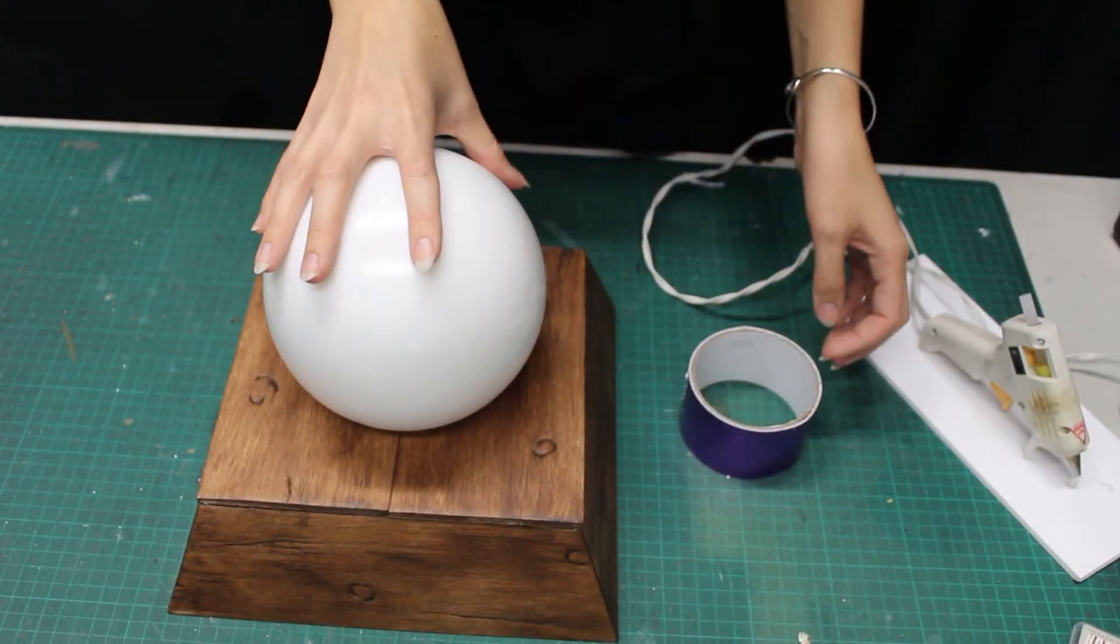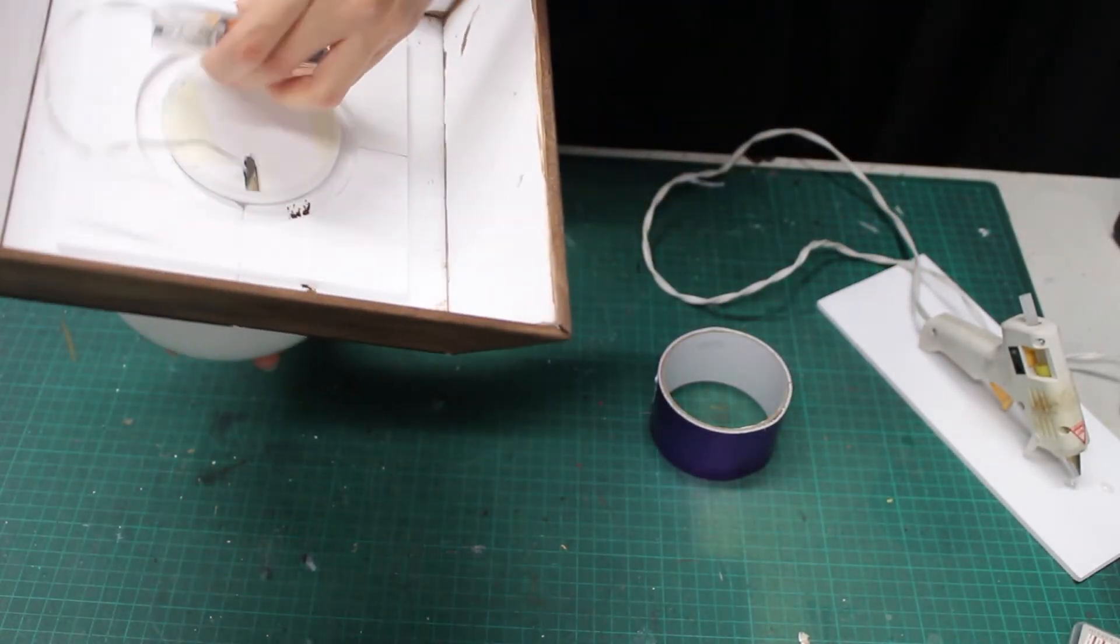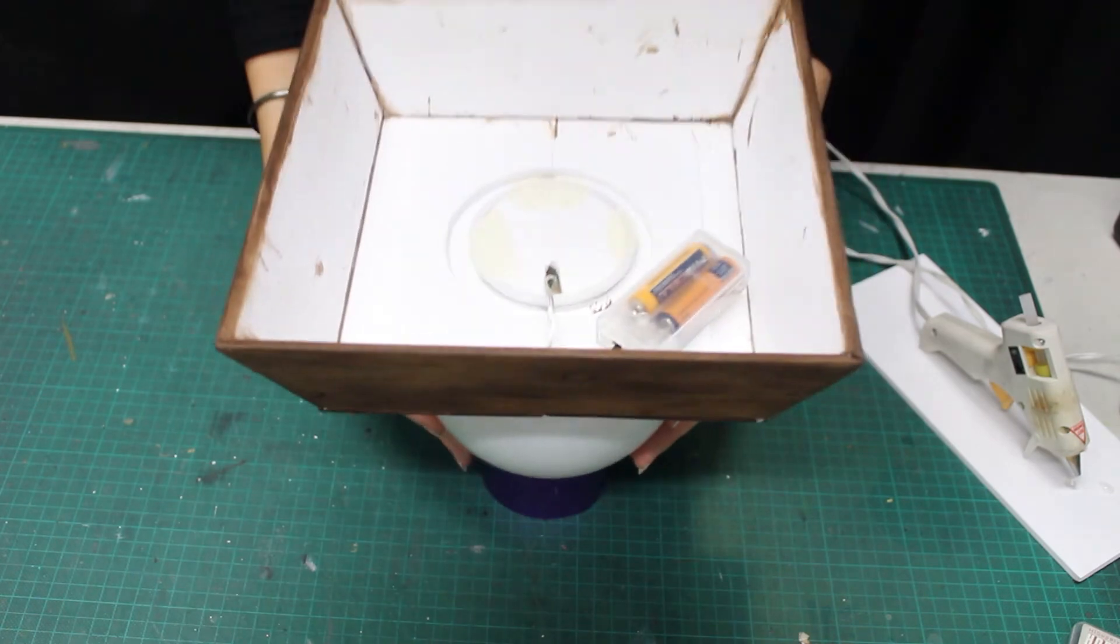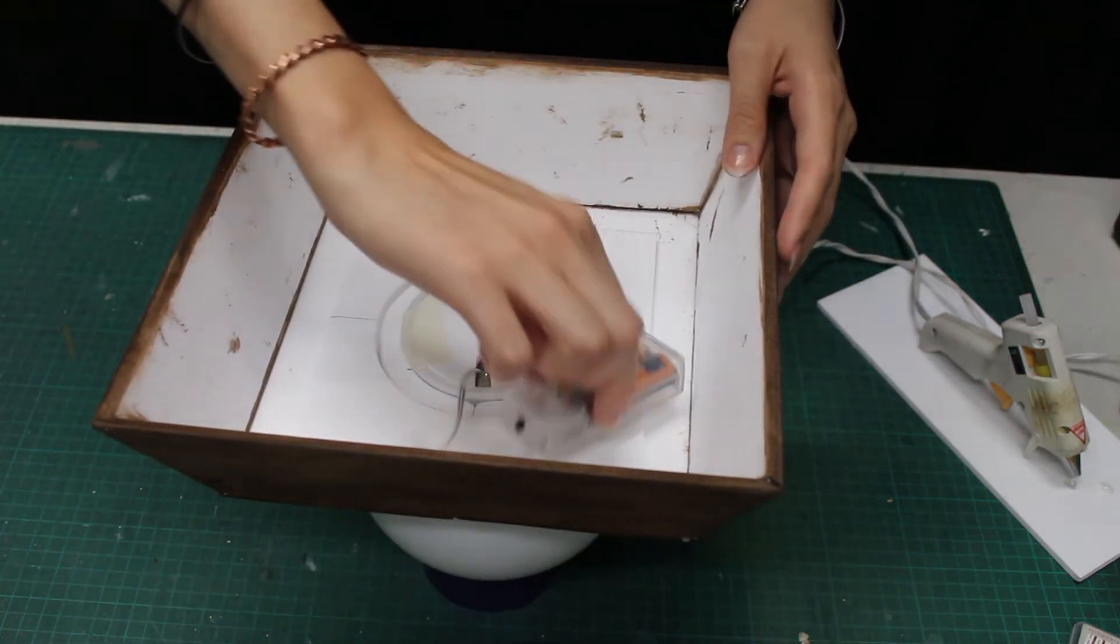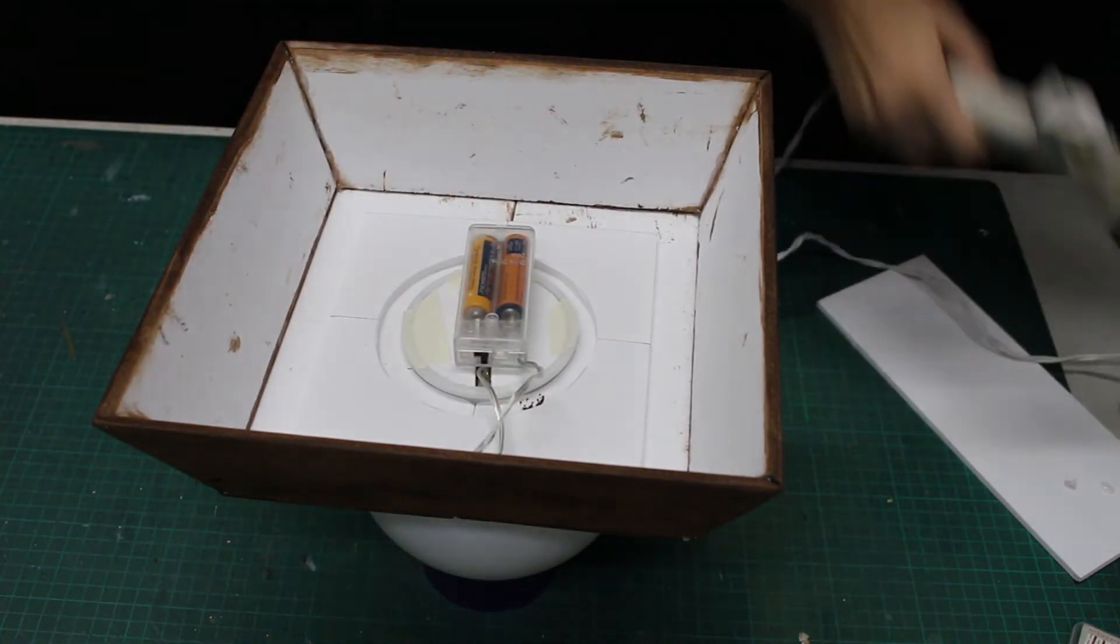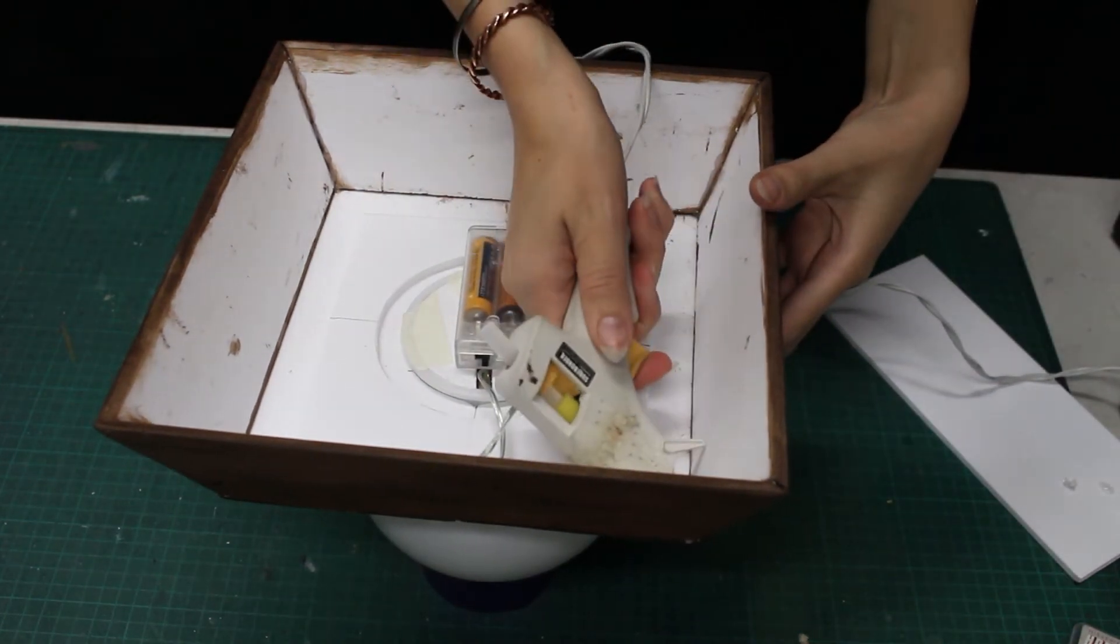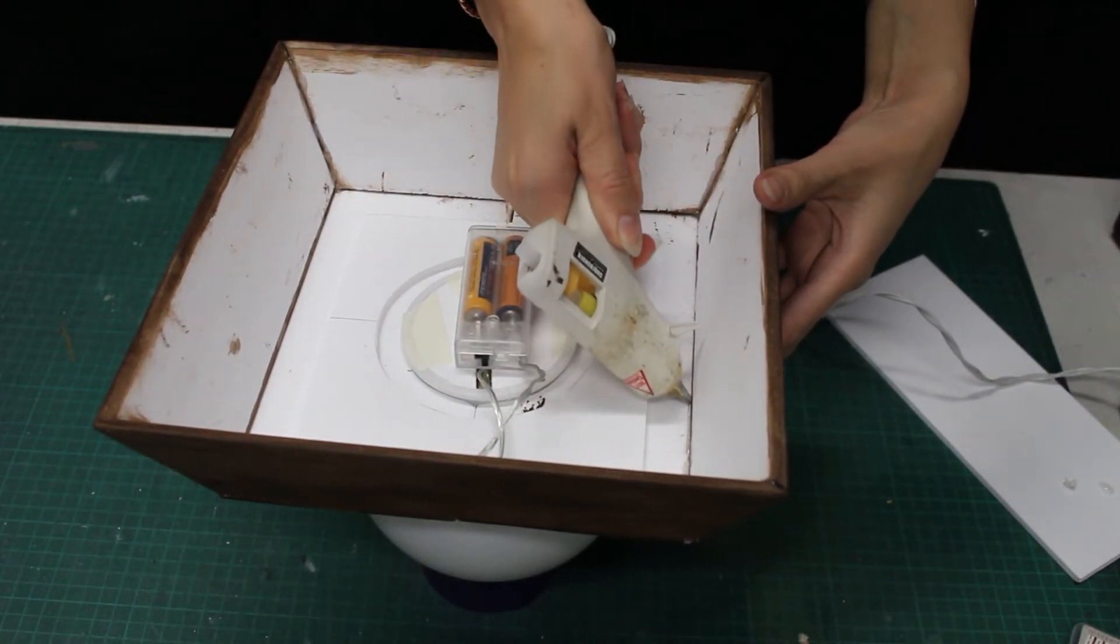Now that all the glue is cooled, we're going to flip the project over. I'm going to run a thick line of glue against all of these seams. This will help hold the edges in place, but I don't have to worry about hot glue on the outside of my project.